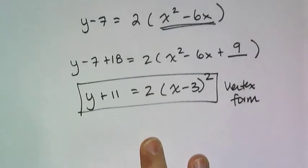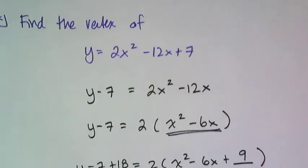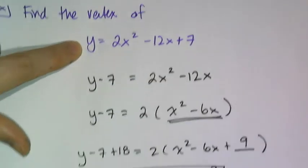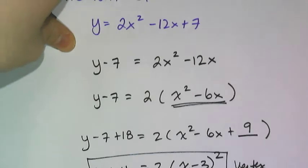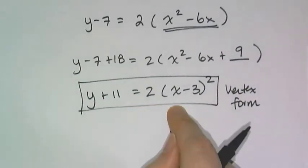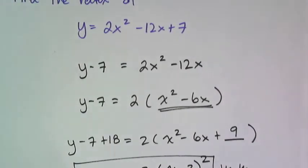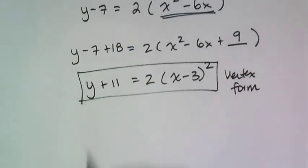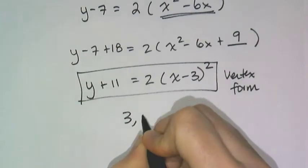And if I want to check to make sure I did this correctly, of course you can graph this along with that to make sure that you get the same table because if you converted it correctly, you better get the same parabola. But remember this doesn't answer the question because it doesn't say convert it to vertex form. It says find the vertex of. And so the vertex is going to be 3 comma negative 11.